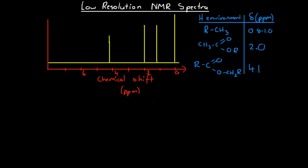In this video we're going to look at how to analyze low-resolution NMR spectra. Low-resolution NMR spectra could be obtained for both carbon-13 NMR or hydrogen NMR. And in both cases, the premise and the way that we analyze both of these two different types of spectra is the same, except in this case we're going to deal with hydrogen spectra in the few examples that we're going to look at here.